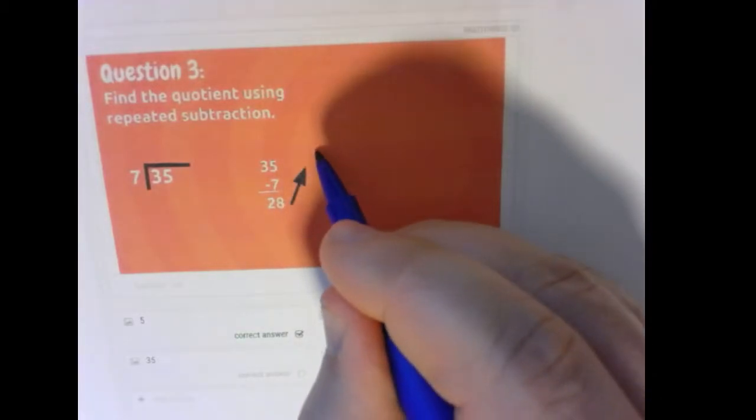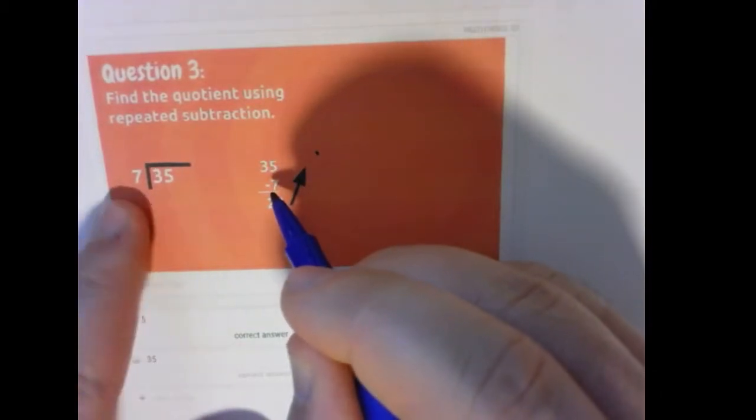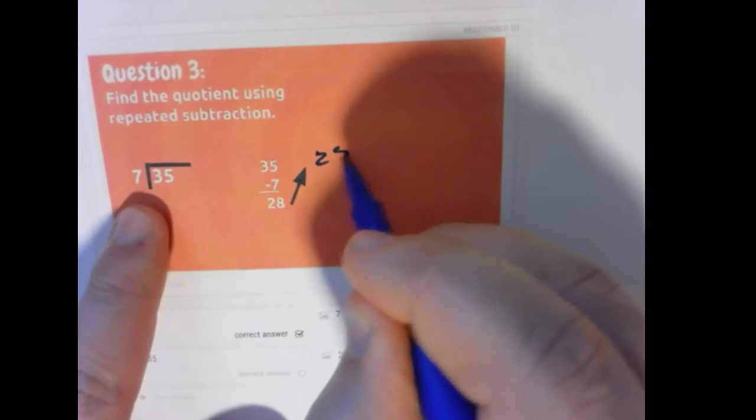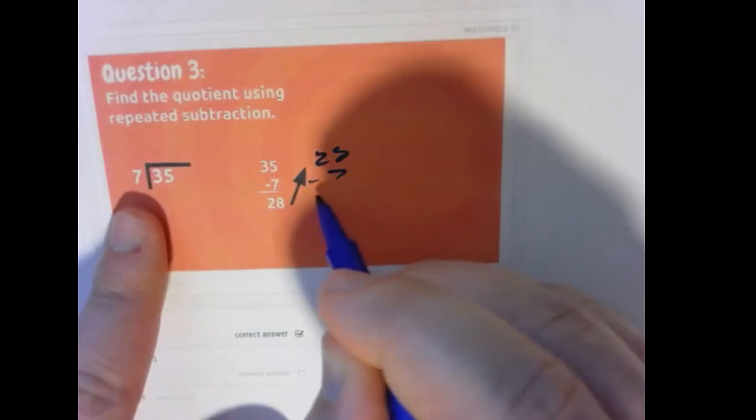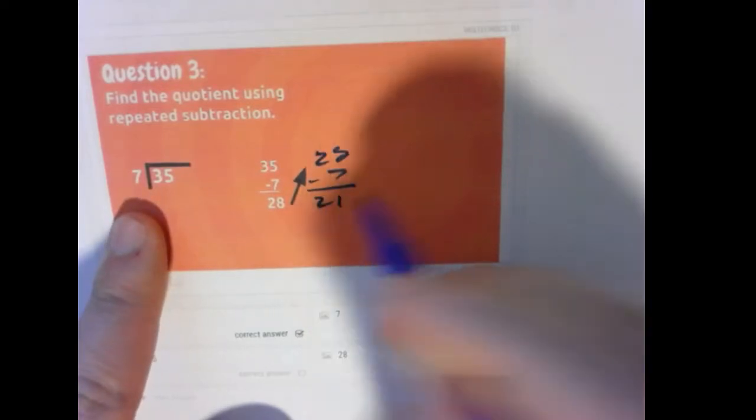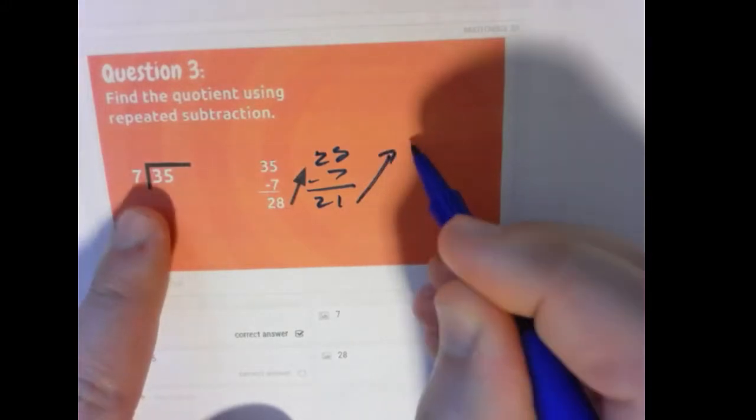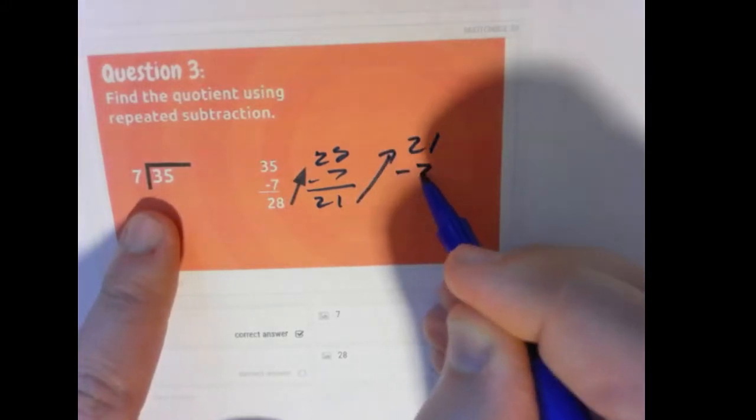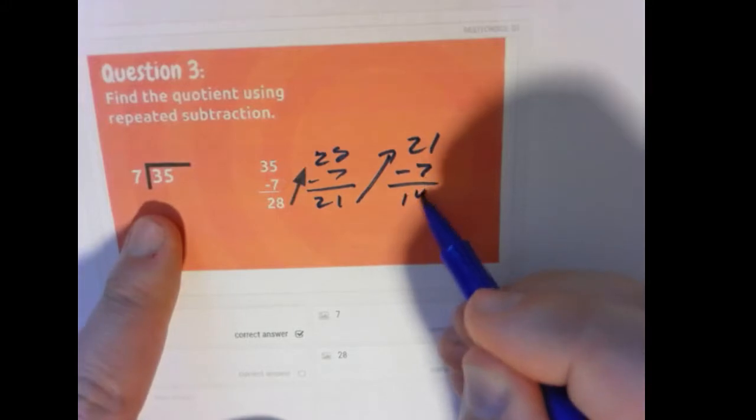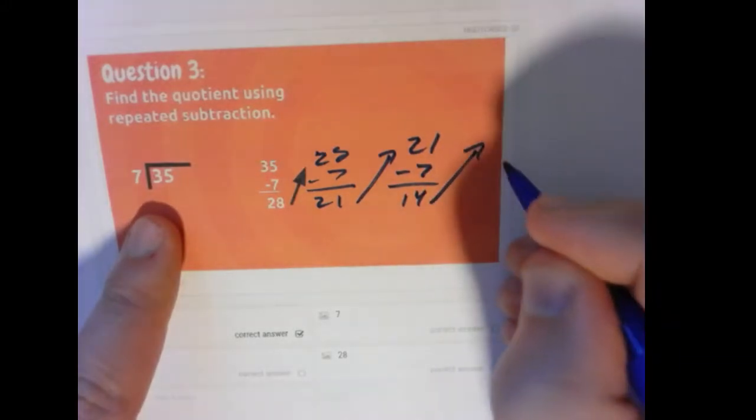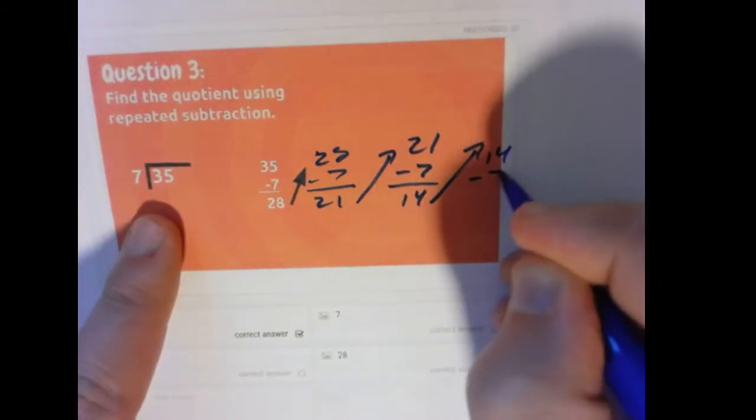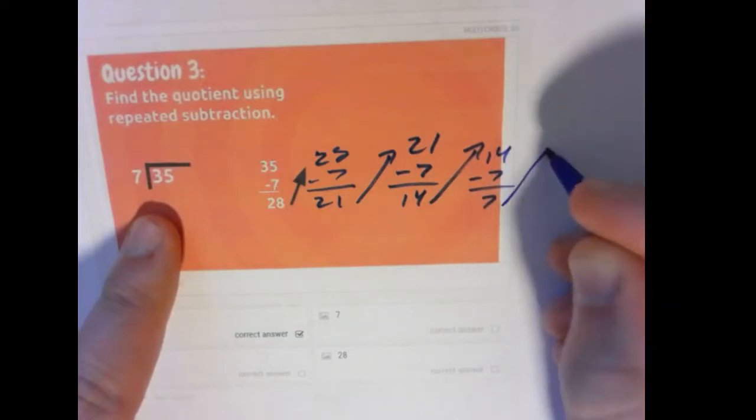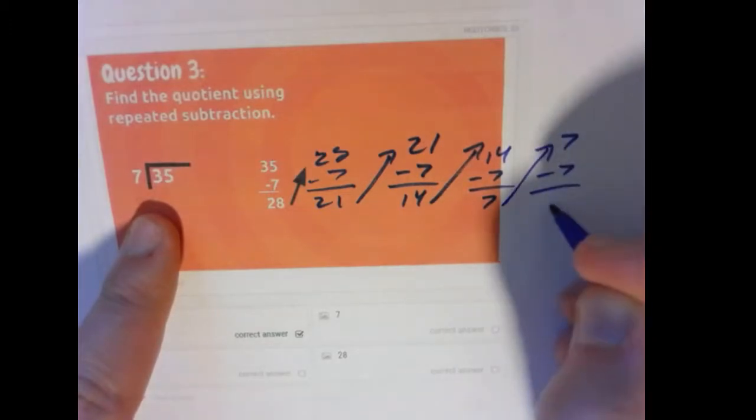Let's do another one. So 35 take away 7 is 28. 28 minus 7 gives us 21. Bring that up. 21 minus 7 again gives us 14. Bring it up. 14 minus 7 gives us 7. We want to go all the way to 0. So 7 minus 7 gives us 0.